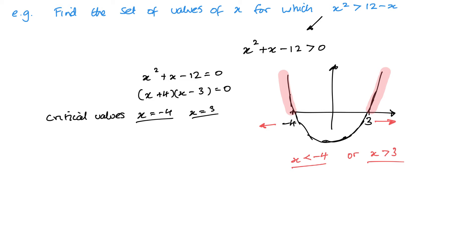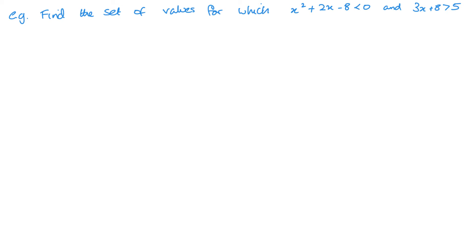As set notation this could be written using the union symbol — that U is union, it's like 'or'. So very much like how we previously did set notation, it works the same here. The next example: find the set of values for which x squared plus 2x minus 8 is less than zero AND 3x plus 8 is greater than 5.